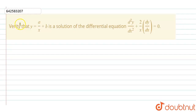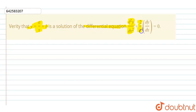The question is: verify that y = a/x + b is a solution of the differential equation d²y/dx² + (2/x)(dy/dx) = 0.